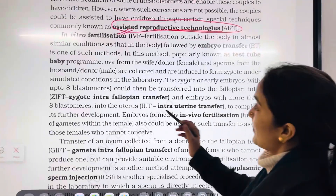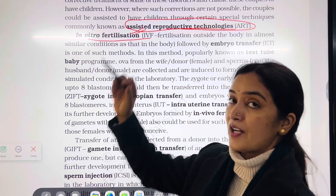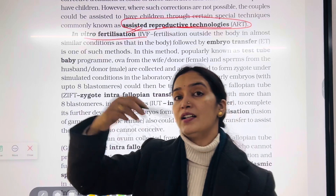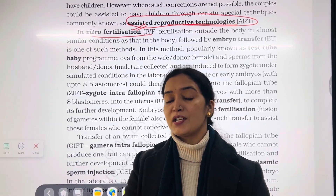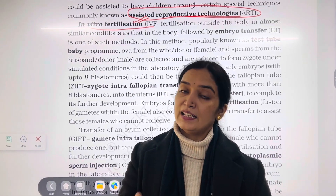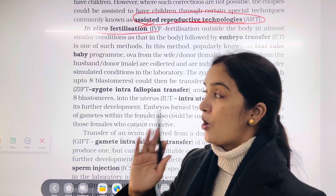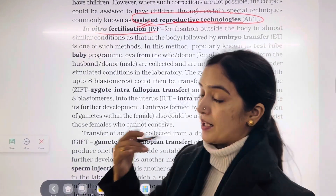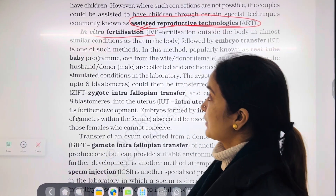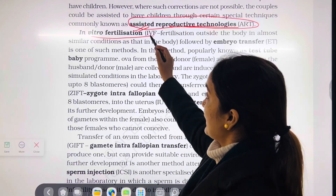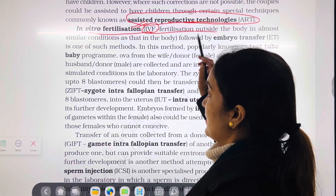First of all, IVF — In Vitro Fertilization. When gametes are fertilized naturally inside the body, that is in vivo fertilization. And when fertilization happens under lab conditions, we say IVF, In Vitro Fertilization.